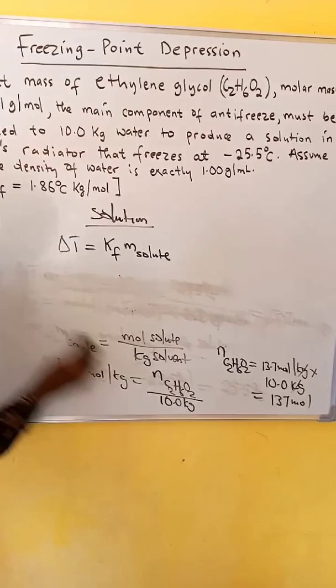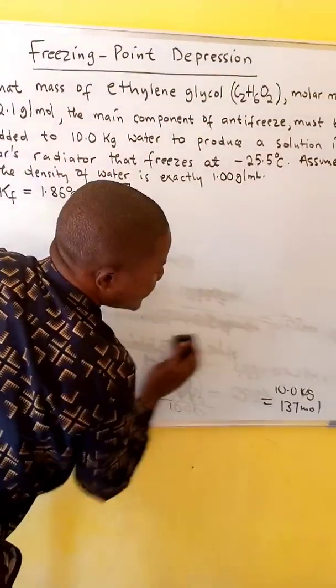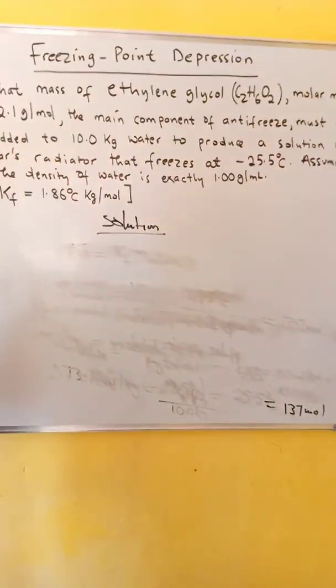Then we have 137 moles of ethylene glycol. We will now use the moles of ethylene glycol to calculate the mass.